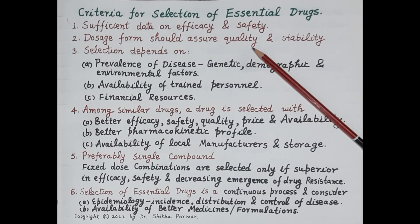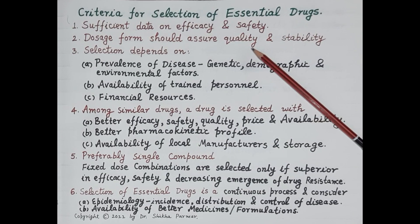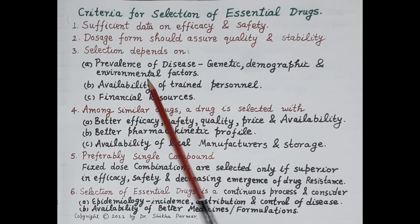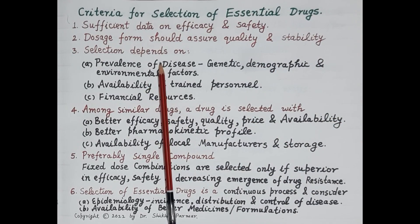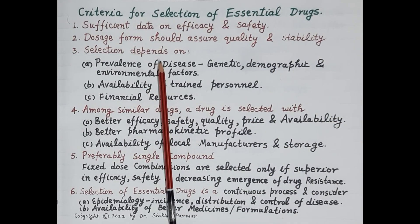The second criterion is with respect to the dosage form of the essential drug. A dosage form is the form in which a drug is available in the market — for example, as a tablet, a capsule, or an injection. The dosage form should assure the quality and stability of the drug.